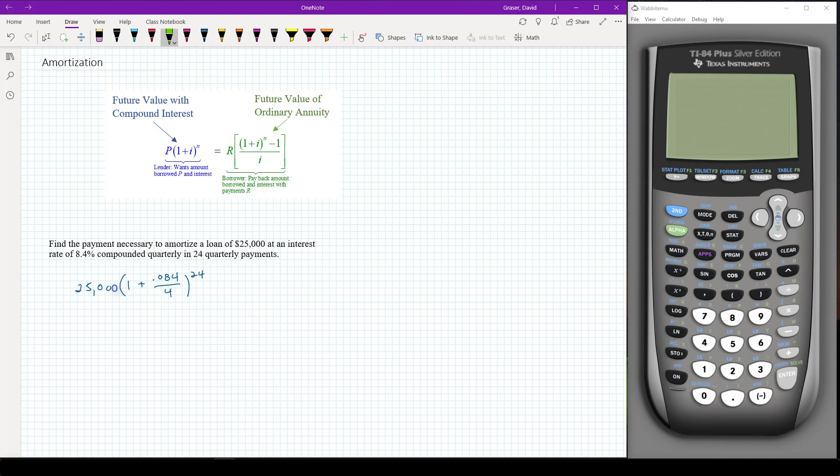We're going to go ahead and find the payment so we're going to solve for R and we're going to go ahead and say R times [(1 + 0.084/4)^24 - 1] in our quarterly payments. We're going to make 24 payments.